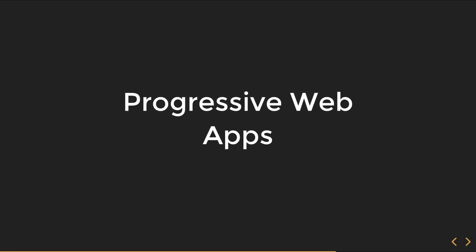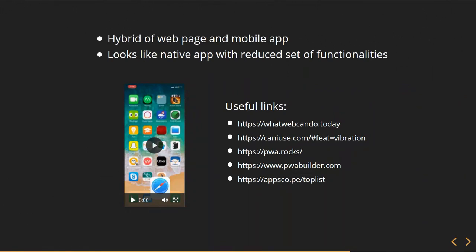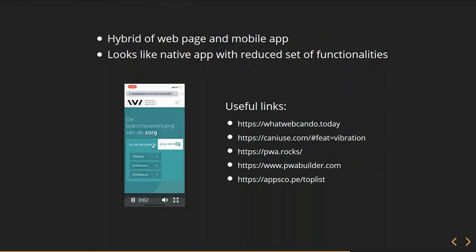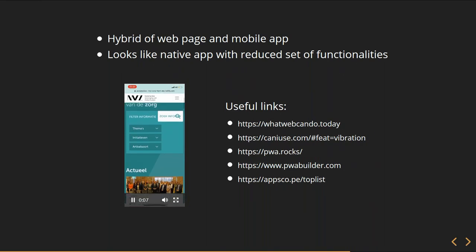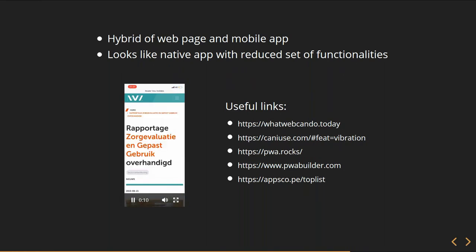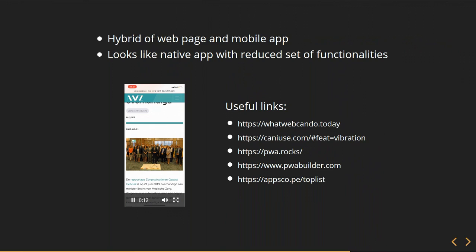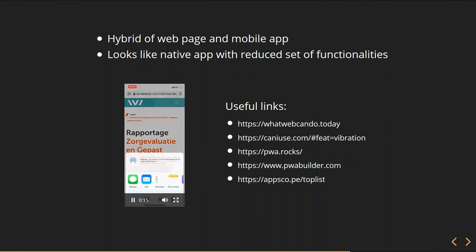Now, to Progressive Web Apps. What is actually a Progressive Web App? A Progressive Web App is a hybrid of a web page and a mobile app. It looks, or it might look like a native app, with a slightly reduced set of functionalities. Here's a small video for this client — it's still in development, not fully optimized, and it doesn't have the right icons and some styles for Progressive Web App yet, but you can see that here: you browse the website and you can add it to your home screen.